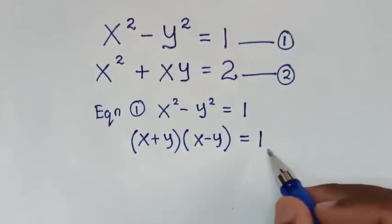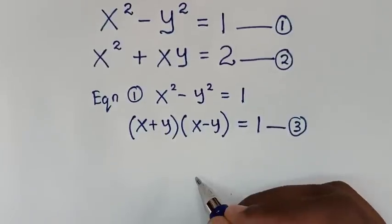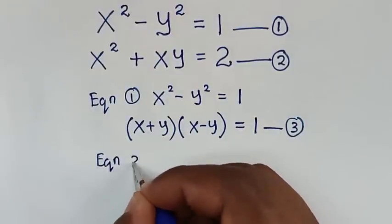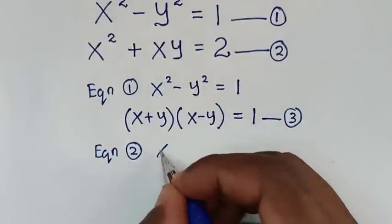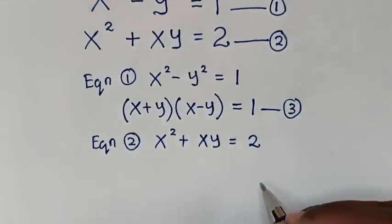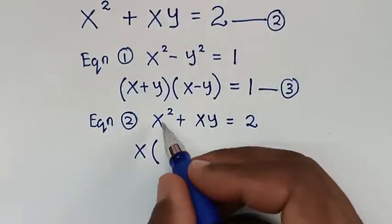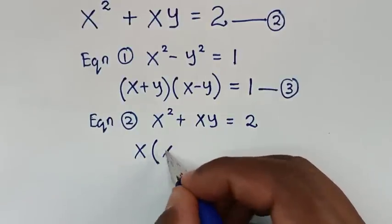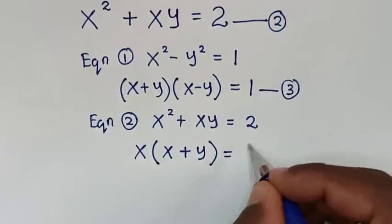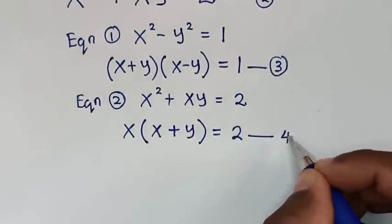Then in the next step, from equation 2, which is x squared plus xy equal to 2, x is common, so we take x out of the bracket: x(x + y) = 2. We let this as equation 4.